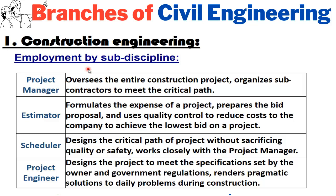If you want to pursue construction engineering, there are different job positions available. The first is project manager, who oversees the entire construction project and organizes subcontractors to meet the critical path. An estimator formulates the expenses of a project, prepares the bid proposal, and uses quality control to reduce costs. A scheduler designs the critical path of the project without sacrificing quality or safety, working closely with the project manager. A project engineer designs the project to meet specifications set by the owner and government regulations, and renders pragmatic solutions to daily problems during construction.